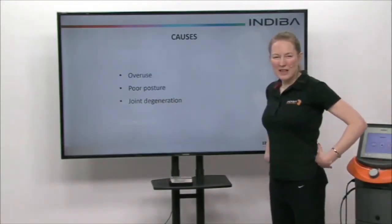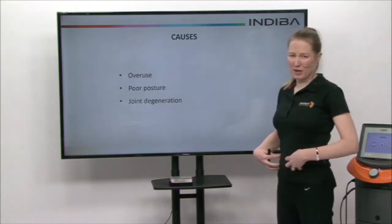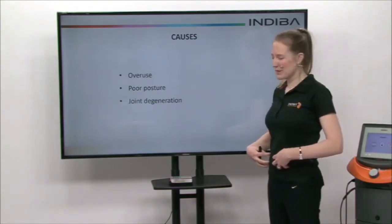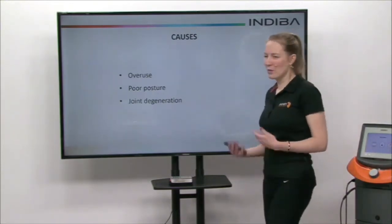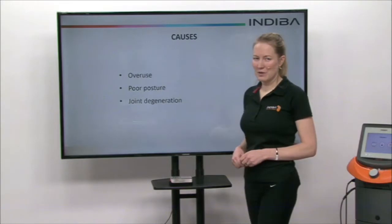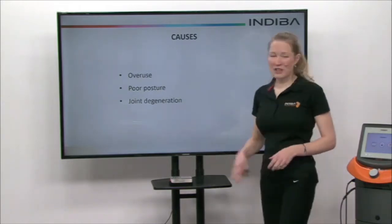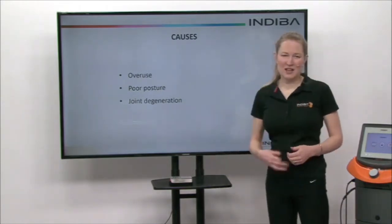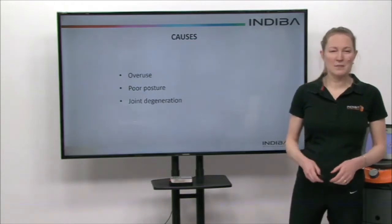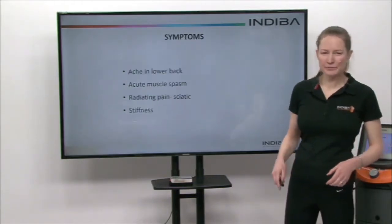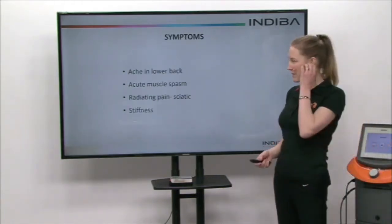Muscles become weak, especially our abdominal muscles and core muscles, so that poor posture can contribute to low back pain. Joint degeneration is also a factor — as we age, we can get osteoarthritis in the joints of the spine.